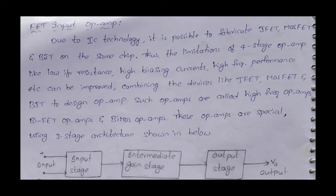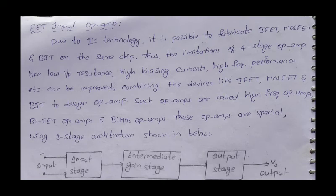Next we discuss BiJFET and BiMOS op-amps. Due to IC technologies, it is possible to fabricate JFET, MOSFET and BJT on the same chip. This means we don't need to use only BJT, or only FET, or only MOSFET. We can take advantage of any type of transistor. These are called FET input operational amplifiers.